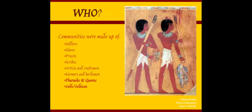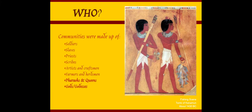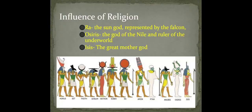So who were the ancient Egyptians? What kind of people were they? Well, they were communities made up of mostly soldiers, slaves, priests, scribes, artists, craftsmen, farmers, herdsmen, pharaohs, queens, and also gods and goddesses. Religion was very important to these people, and it had a big influence on their works of art.